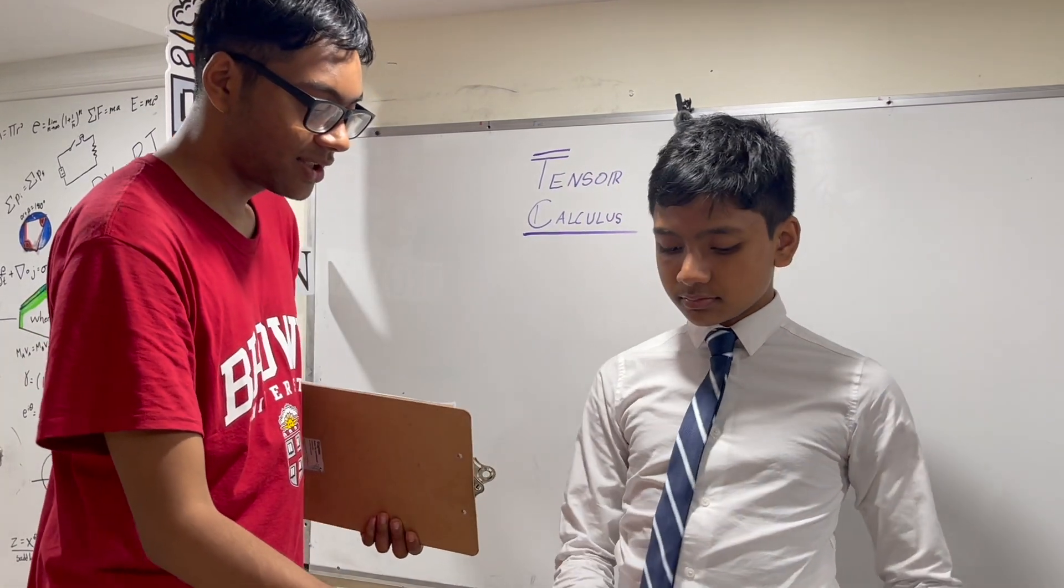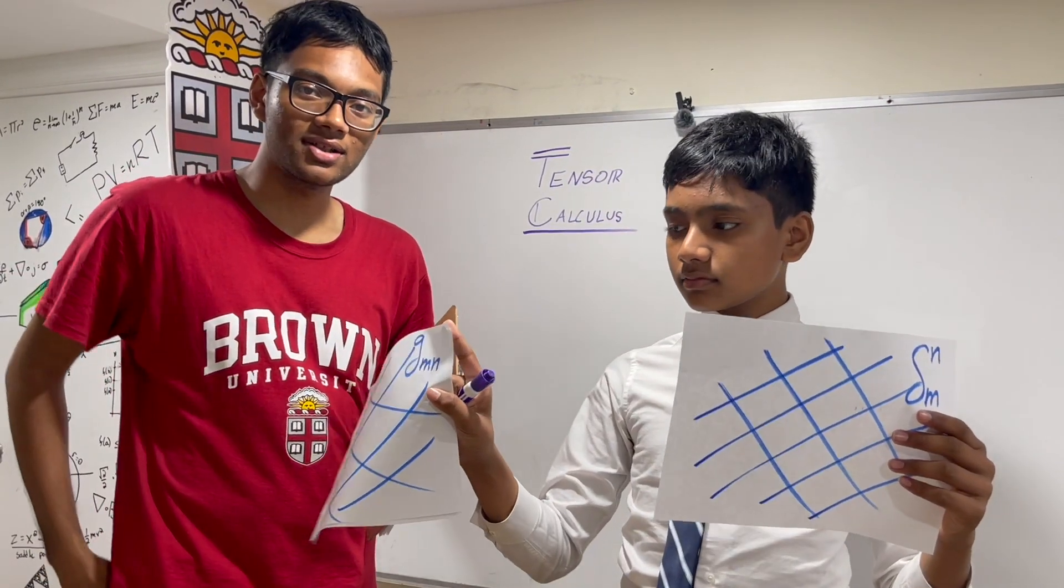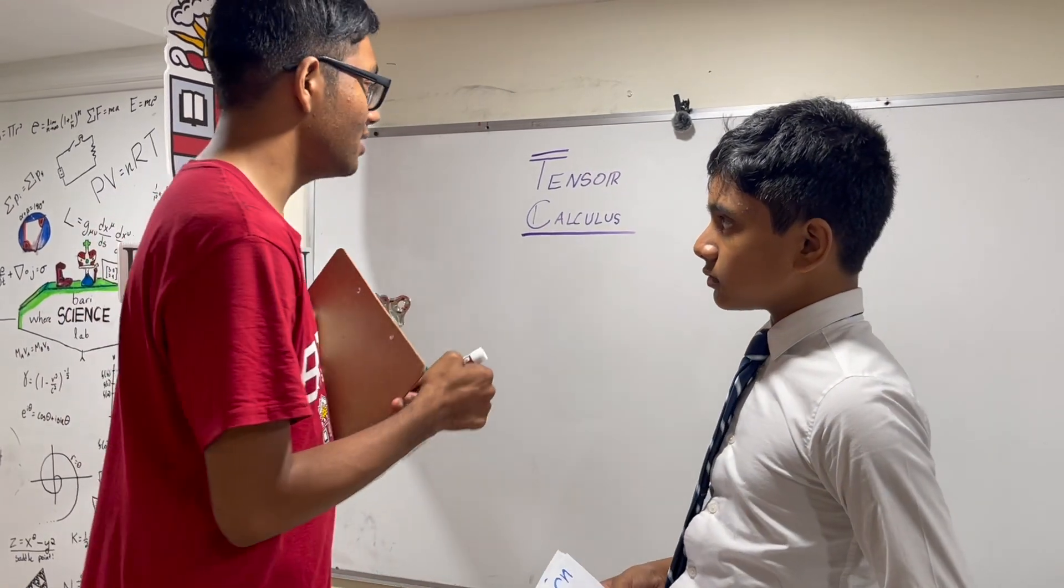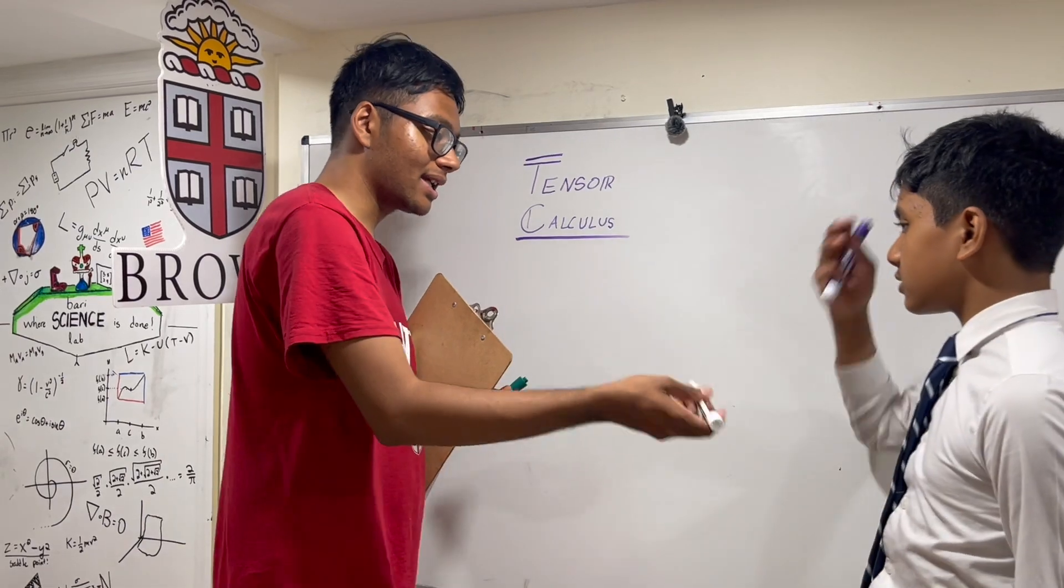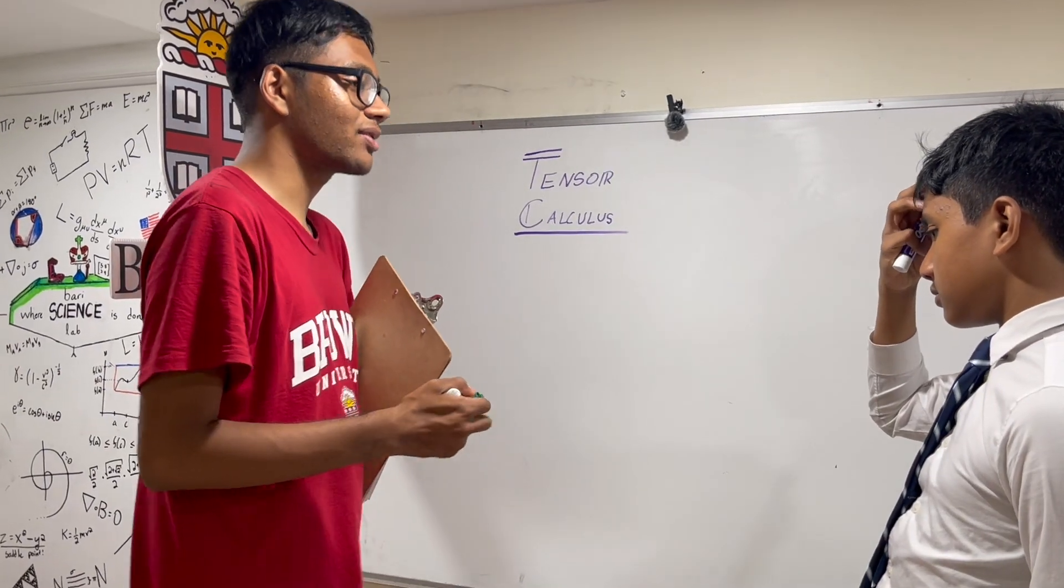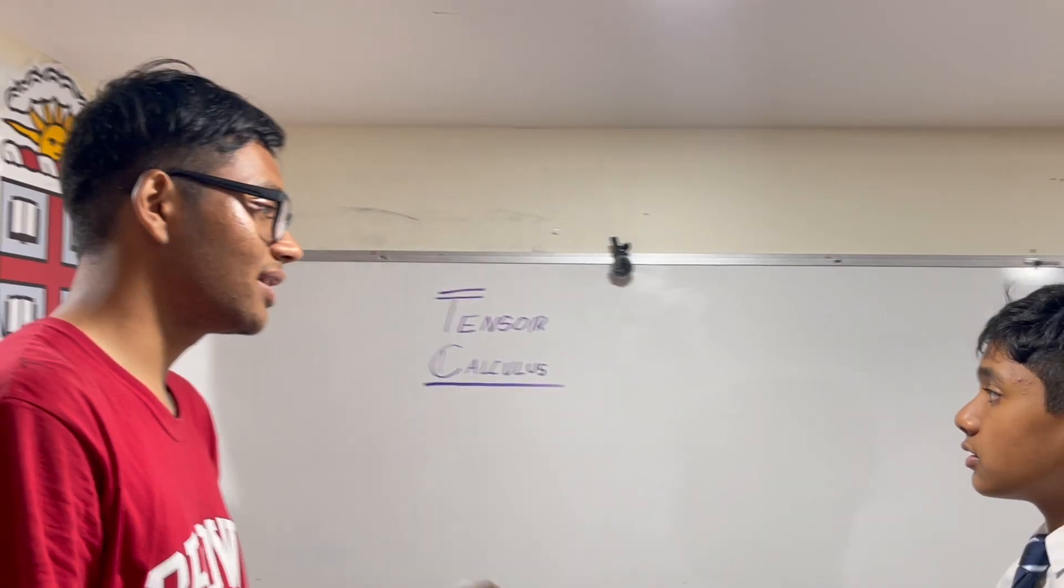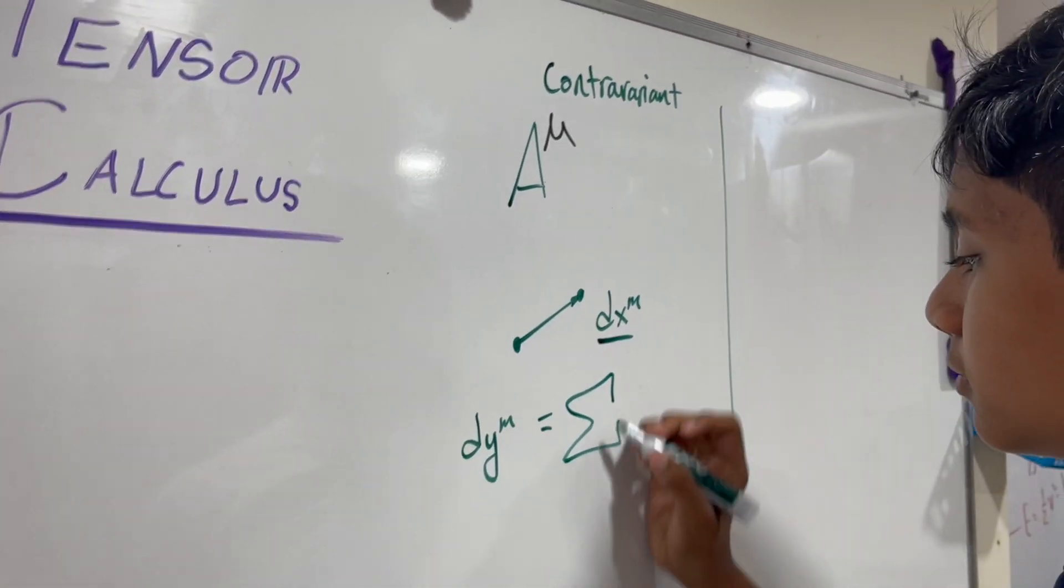Okay. So let's get started with the geometric interpretation of the two main types of vectors, right? Contravariant and covariant. Yeah. Can you tell viewers a little bit about contravariant and covariant?